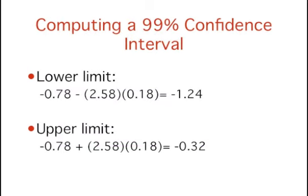If we wanted to compute a 99% confidence interval on the same data, we would use the Z of 2.58. To calculate the lower limit, take the Z' value minus 2.58 multiplied by 0.18 to get negative 1.24.